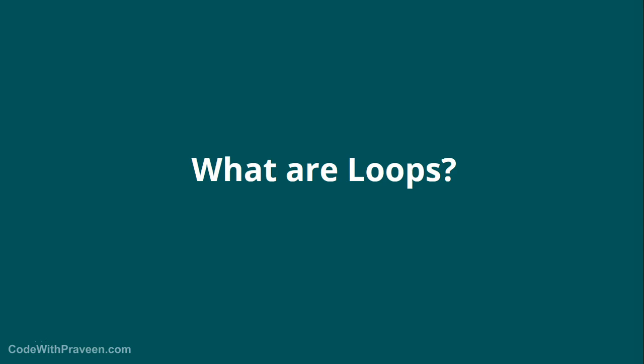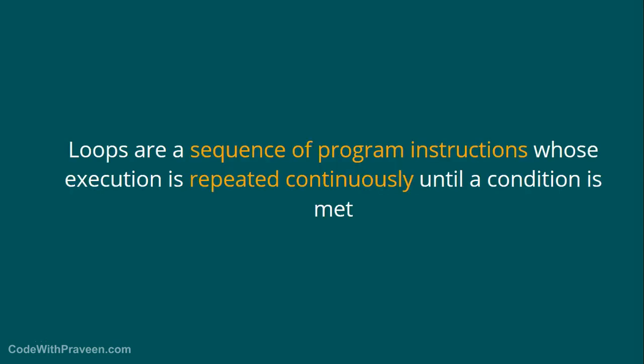In this video, let us see what are loops. Loops are a sequence of program instructions whose execution is repeated continuously until a condition is met. For example, if you want to have a certain set of instructions you want to keep executing multiple times, then either you can repeat it multiple times or you can just write it once and try to execute it continuously until certain condition is met.